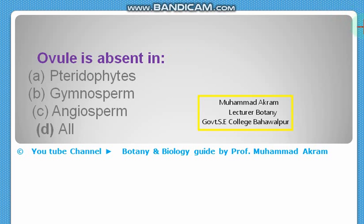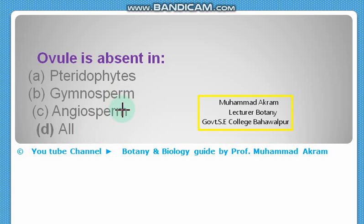The next question: the ovule is absent in — pteridophytes, gymnosperms, angiosperms, or all? In gymnosperms and angiosperms the ovule is present, while in pteridophytes the ovule is absent. The right option is option A — pteridophytes.